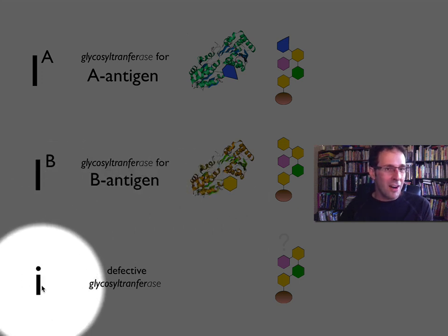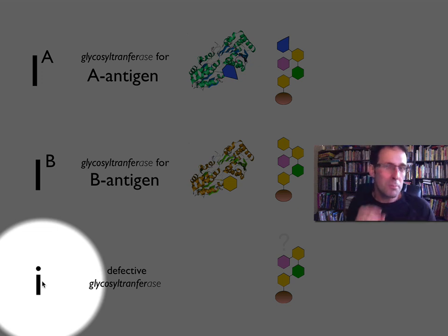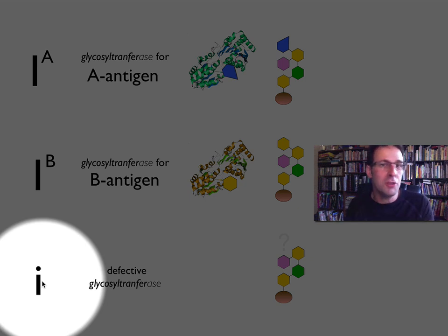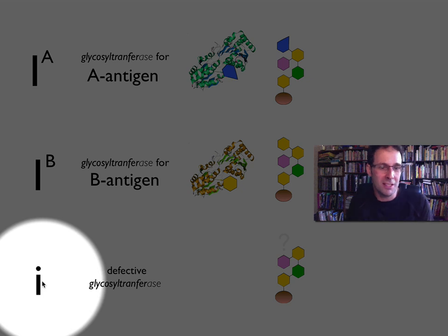And a third allele, which we call little i, is really a defective version of the gene. What's happened in it — if you've done some work on mutations — is there's a single base deletion, which causes a frameshift mutation. And as a result of that frameshift mutation, it causes a stop codon.